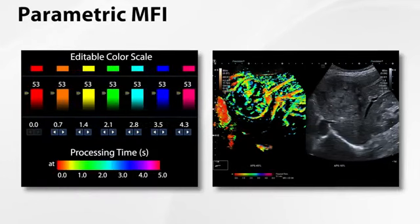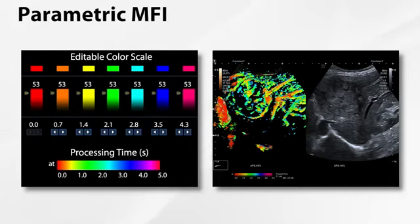Of course, if you can obtain the information you need from the original clip, it can prevent a repeat contrast injection, saving time and money. Parametric MFI — MFI is short for microflow imaging — expands on the traditional MFI by colour coding the contrast arrival time.